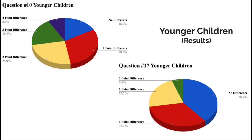Moving on to questions 10 and 17 for the younger children: question 10 shows a similar result to question 7 — it's fairly spread out, but the number of four-point difference answers is pretty low at only 8.3%, proving our hypothesis that the change between ages is not very significant. With question 17, 38.9% had absolutely no difference in their data, which is really important. It shows that there is not a big difference between what the child said in their interview compared to what the adult said when the child was a baby.